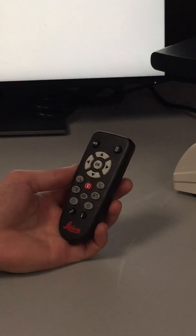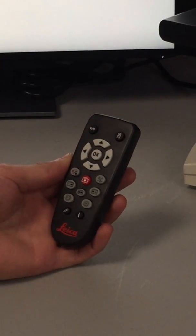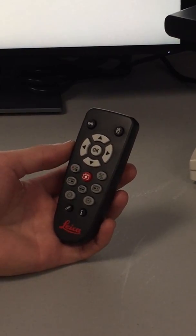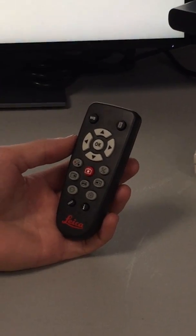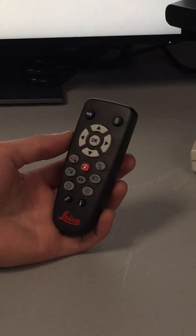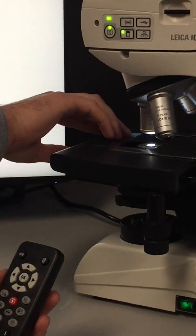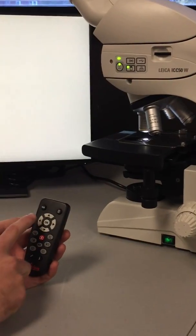One of the features of this camera is the remote. This optional remote allows you to control the camera when it is in HDMI mode. One of the most important buttons on this remote is the white balance button.